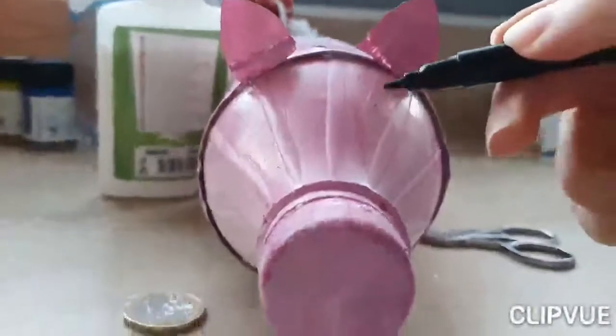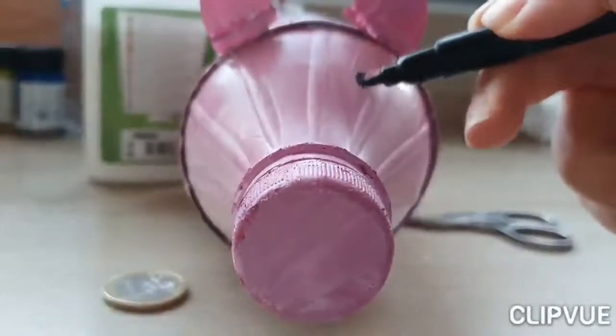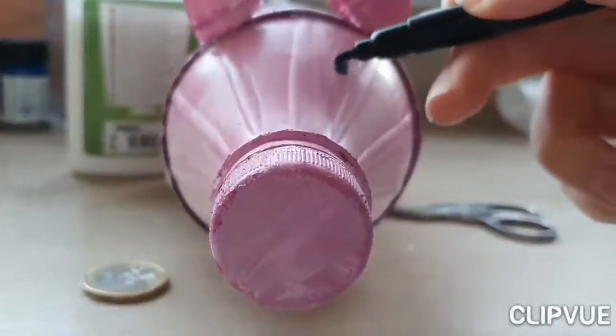And for the last step, you can use googly eyes or a marker to create the eyes and draw two dark circles for your piggy's nose.